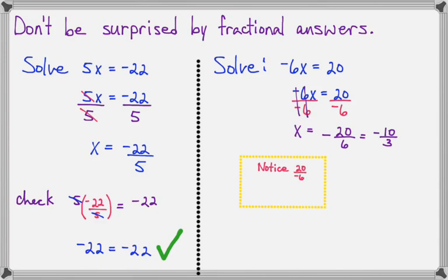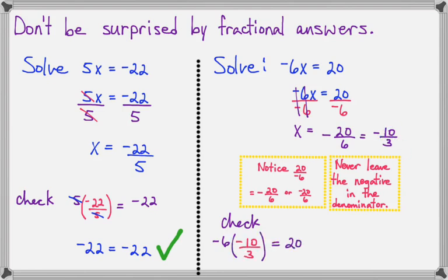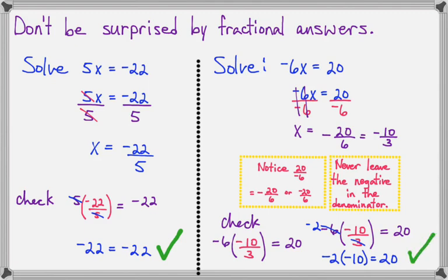Just to remind you, 20 over negative 6 is the same as negative 20 over 6. We never leave the negative in the denominator — we will move it to the front or to the top of the fraction. Now let's check. I'm going to take x out and replace it with what I think the answer is: negative 10 over 3. Negative 6 divided by 3 simplifies to negative 2, and then negative 2 times negative 10 makes positive 20. So this one is correct as well.